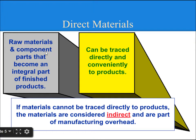What are Direct Materials? Raw Materials and Component Parts that become an integral part of Finished Products. They can be traced directly and conveniently to products. If a material cannot be traced directly to products, it is considered Indirect Material and is part of Manufacturing Overhead.